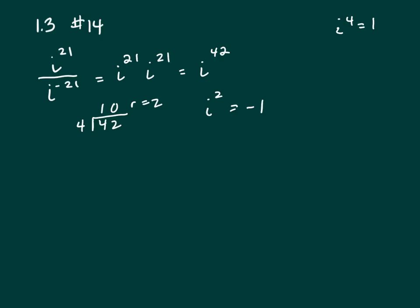The reason this works, this is a long way to do it. If you had i to the 4th to the 10th, that's i to the 40th, but you need 2 more. So i squared, i to the 4th is 1 to the 10th, so you're left with i squared, which is negative 1. So always divide by 4 and take i to the remainder.